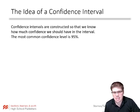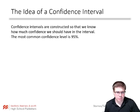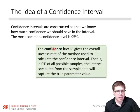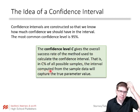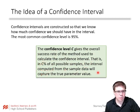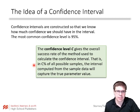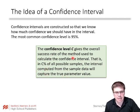The most common confidence level we use is 95%, but we'll also use 99% or 90%. The confidence level C gives the overall success rate of the method used to calculate the confidence interval. That is, in C% of all possible samples, the interval computed from the sample data will capture the true parameter value. The confidence is in the process — if we repeated this process many, many times, 95% of the time it works. That's what a confidence level of 95% means.